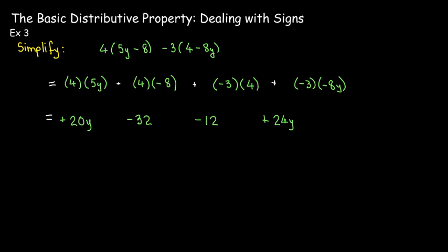Once I've got all these products, I still have to look for like terms. Remember, like terms have the same variable raised to the same exponent, or they're just constants. So I collect the two constants — they combine to make negative 44. And the two y terms combine to make positive 44y.